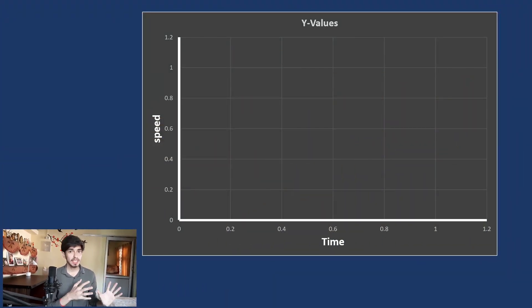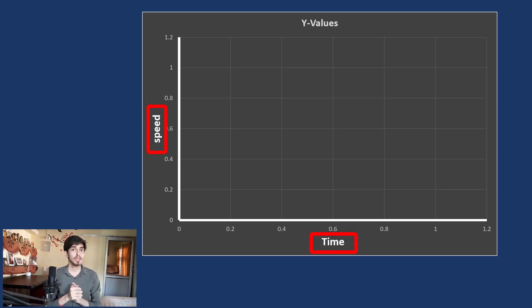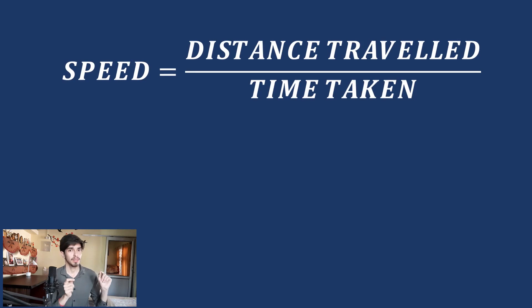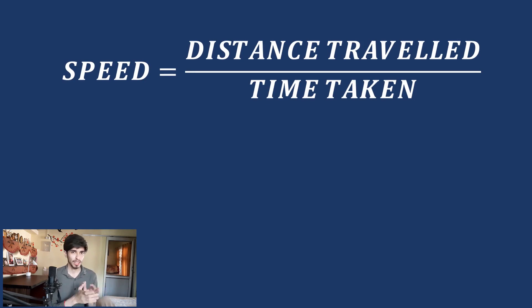Take a look at this graph. In this graph, the x-axis represents time and the y-axis represents the speed of a body. Let us say a body is moving with a constant speed, so it would look like this. From this graph, we need to find the distance travelled by the body at time t. Speed is equal to distance travelled divided by time taken, so distance travelled equals speed times time.